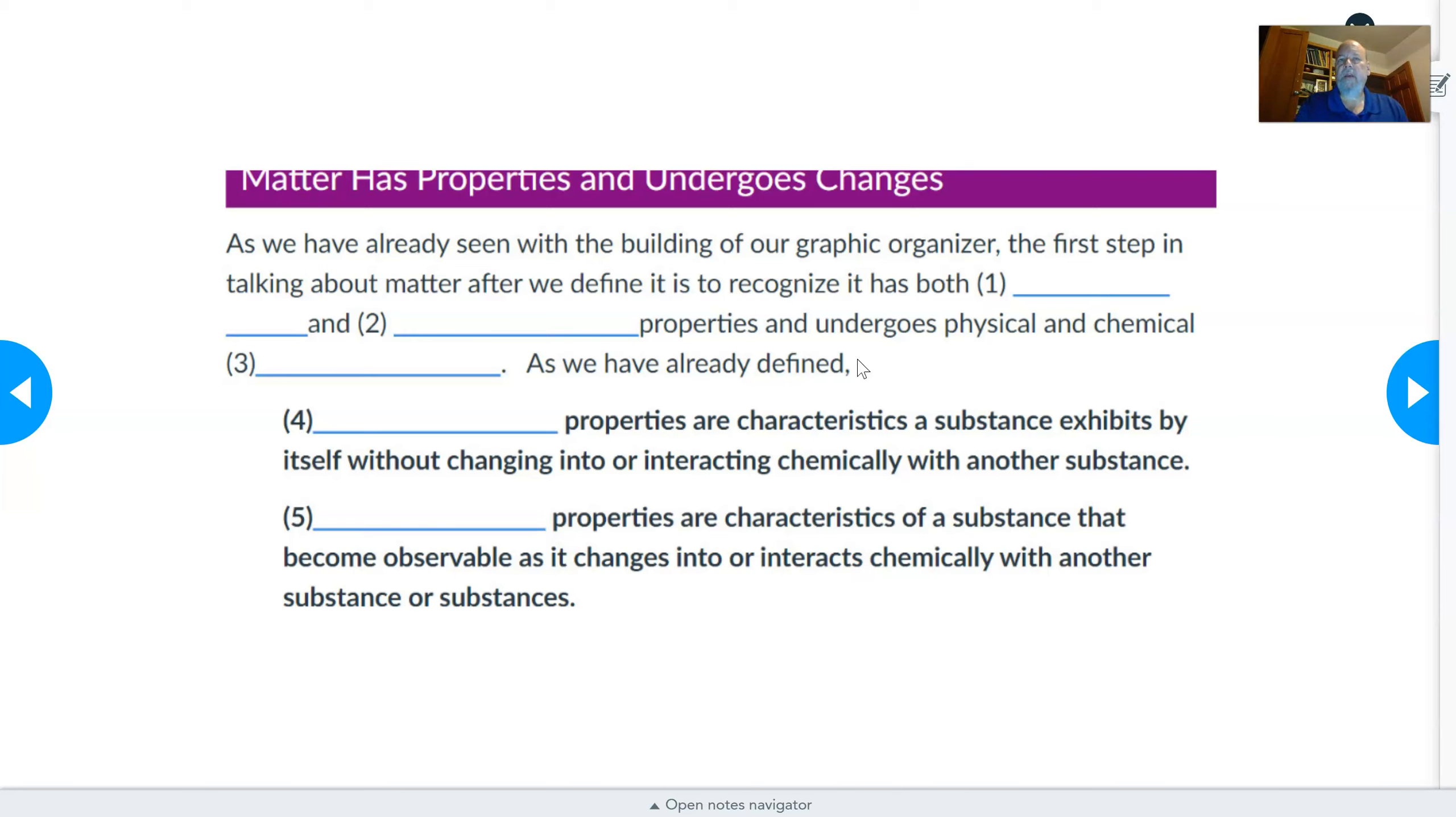We defined matter as anything that has mass and volume, and because we defined this term using two other terms, we also need to define those two other terms. So we also defined and described mass and volume, and talked about the units that we're going to use. Then we said that there's an important property of matter called density that is the amount of mass in a volume of space.